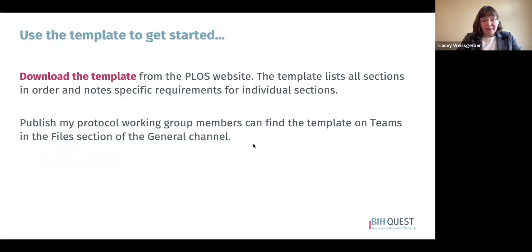The first thing you want to do is use the template to get started. You want to download the template from the PLOS website, and that template lists all sections in order and notes the specific requirements for each of the individual sections. That is your instruction guide to this article type. For those watching as part of the Publish My Protocol Working Group course, the template is available on Teams in the files section of the general channel.